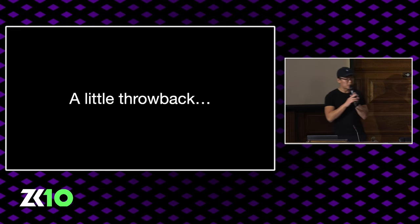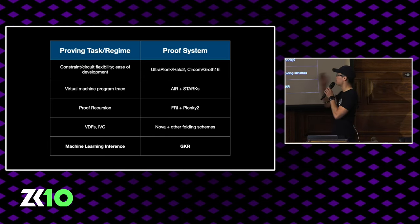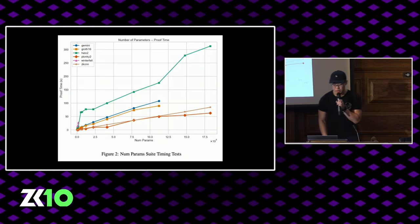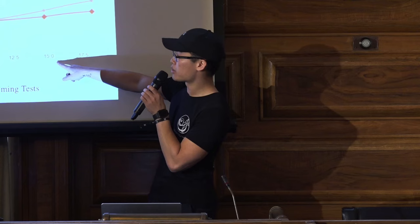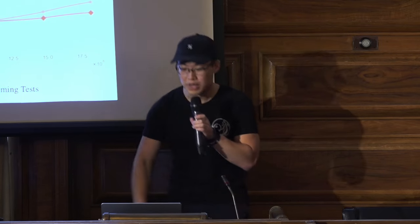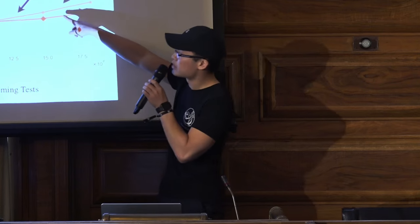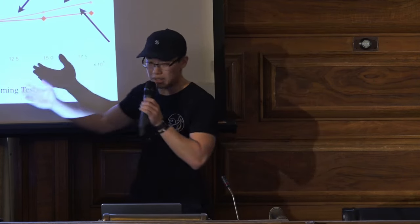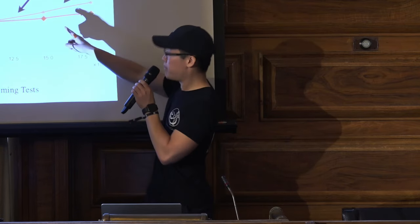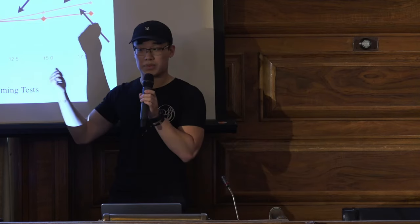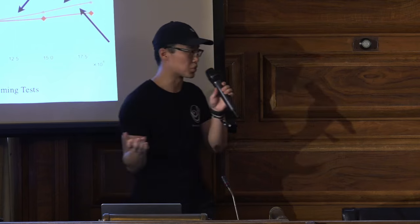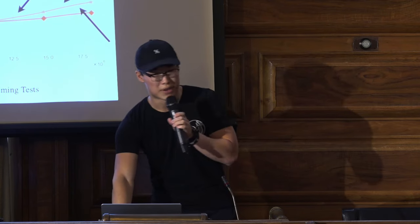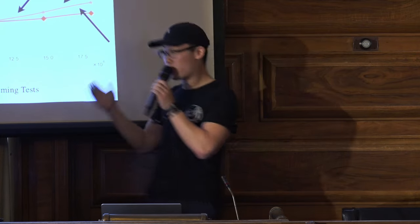At the beginning of this year, we wrote a paper called 'The Cost of Intelligence,' which took many of the proof systems you see on screen, including GKR, and ran a bunch of neural nets through them. On the x-axis is the number of parameters in the model; on the y-axis is how long it took to generate the proof. The orange star line is GKR — it performs very quickly, scales very well, and does even better than shown here because the implementation was single-threaded while everything else had 64 cores.